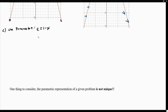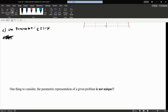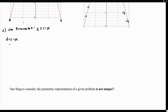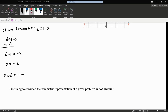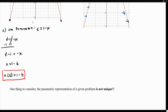Here we have our parameter t equals 1 minus x. To come up with x of t, we solve for x: t minus 1 equals negative x, so x equals 1 minus t. Therefore, my parametric equation for x is 1 minus t. The parametric equation for x is always defined by the way that we define our parameter — given the parameter, solve for x, and that defines our parametric equation for x.